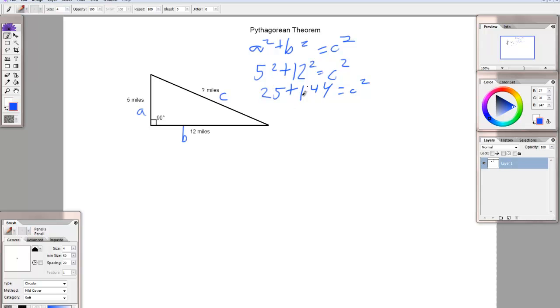Now, you can do what you can, you can add 144 and 25 together. So, 144 plus 25, 5 plus 4 is 9, 4 plus 2 is 6, 169 equals c squared.